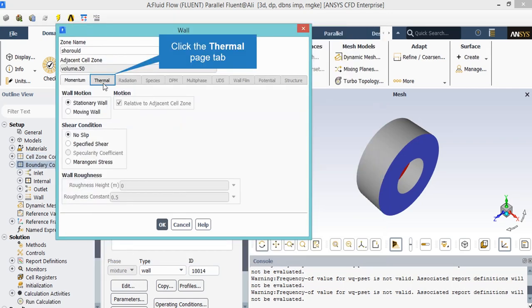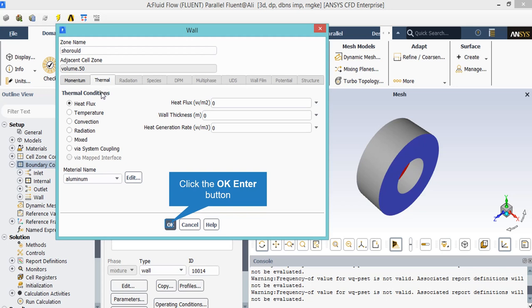As was expected, the outer wall of this compressor is considered to be a stationary wall since these parts do not move. And as for the thermal condition of the wall, we may see that the heat flux thermal condition is defined, and also the heat flux rate is set to be zero for this wall.